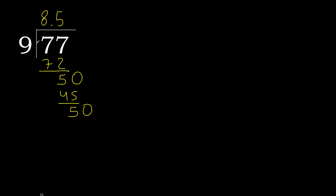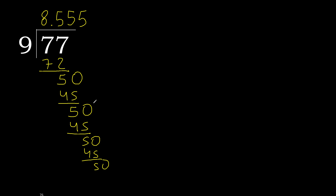59 multiplied by 5. Subtract — complete. 9 multiplied by 5 is 45. Subtract — complete.